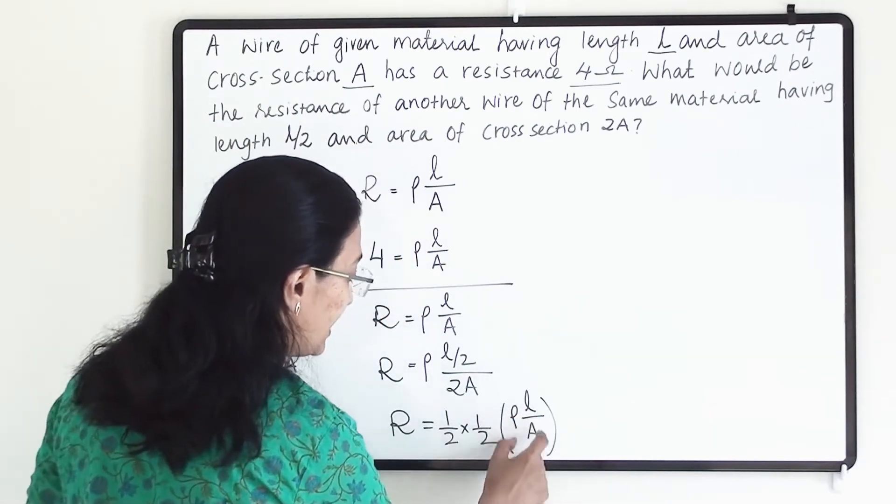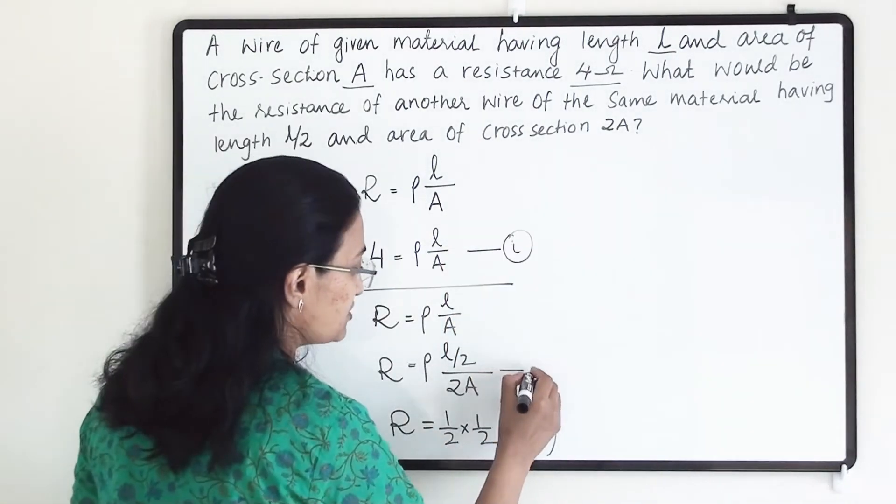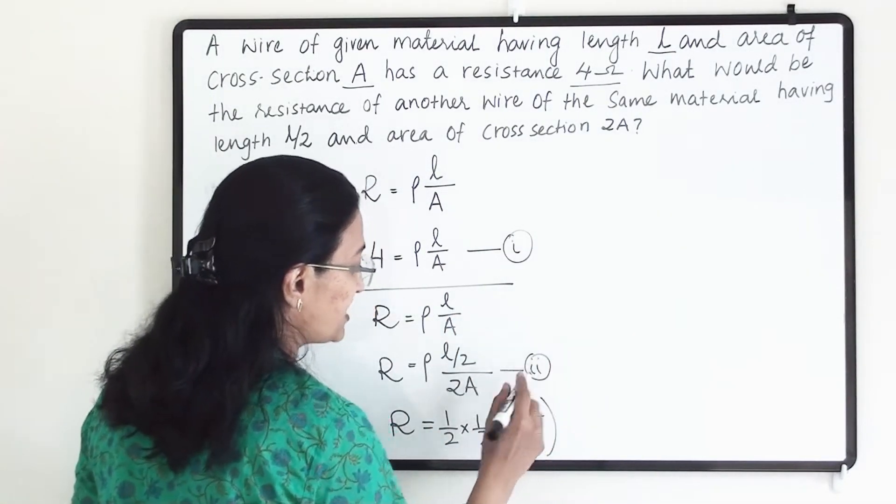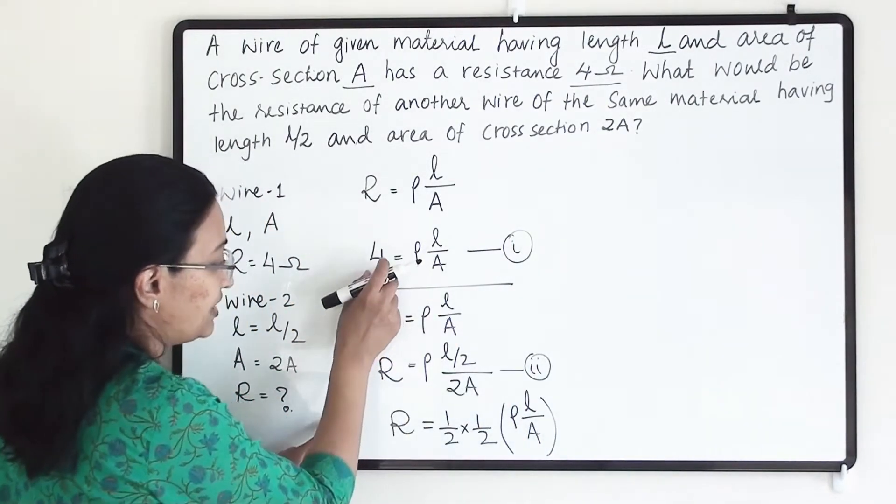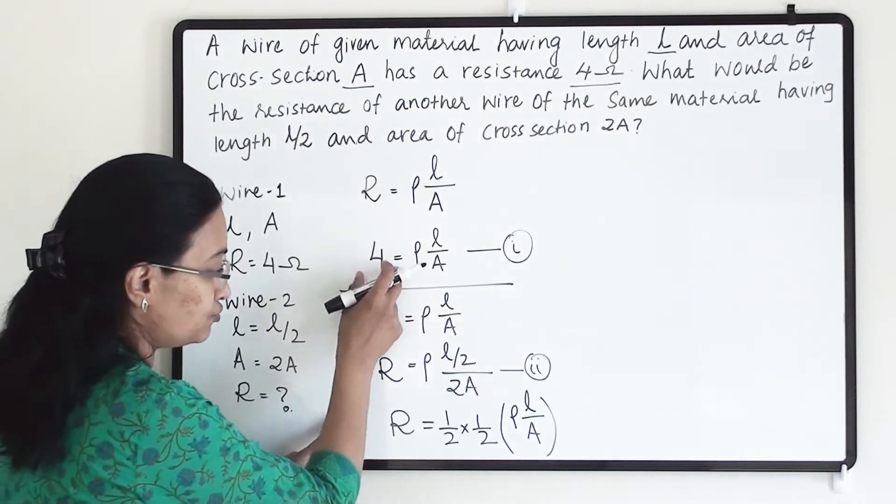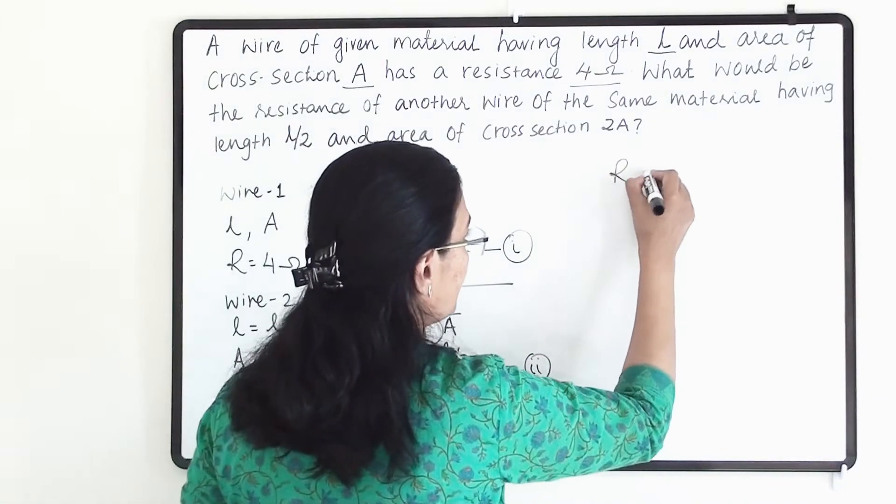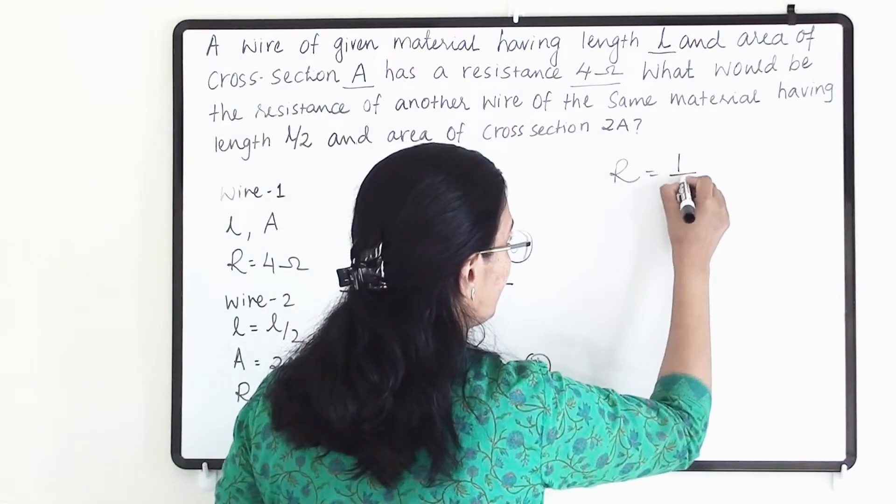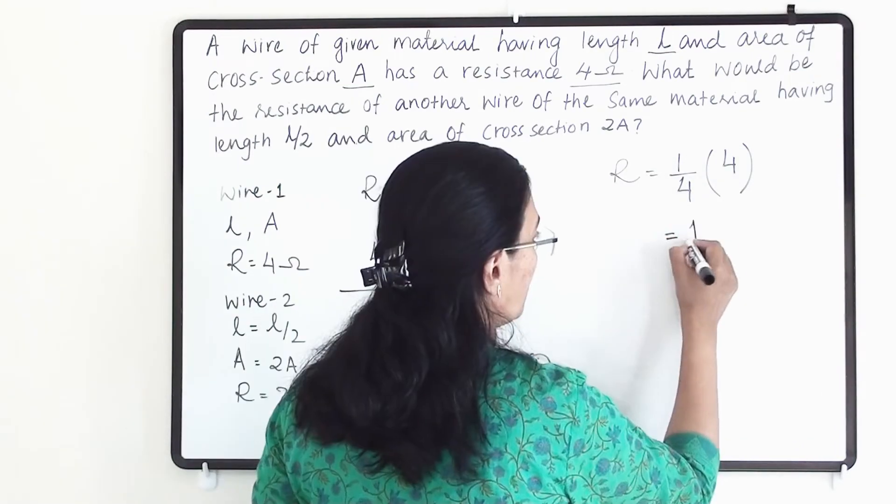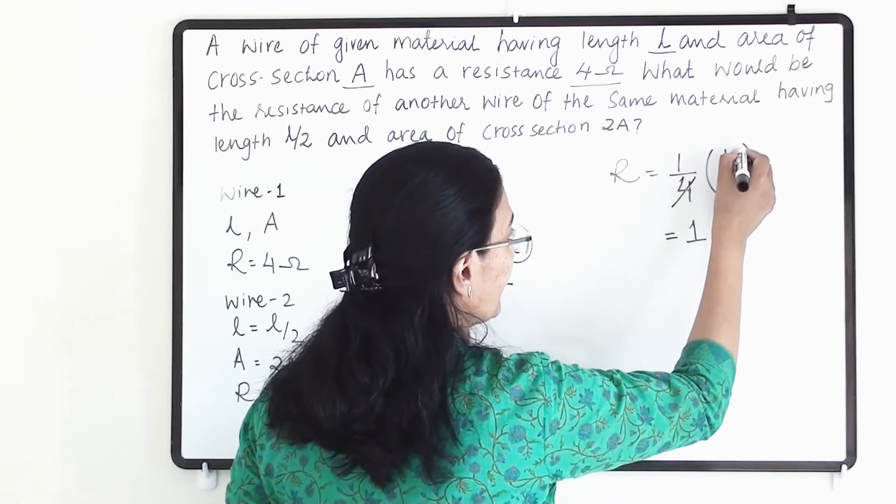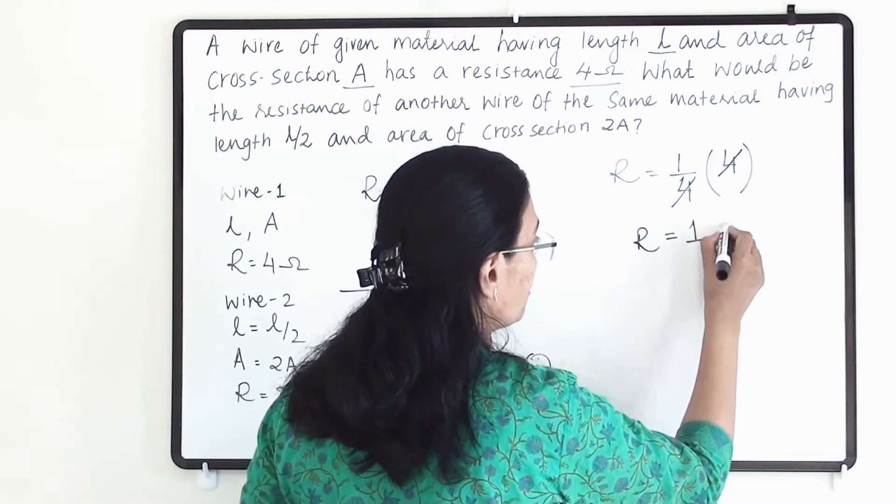Now rho L by A value is 4 from equation 1. This is going to be our equation 2 as per wire 2. So as per equation 1, this formula will give us value that is 4. So let us substitute, 4 equals rho L by A. So here we will get R equals 1 divided by 4 into 4, which will give us 1 because 4 and 4 we can cut it out. So here we will get 1.